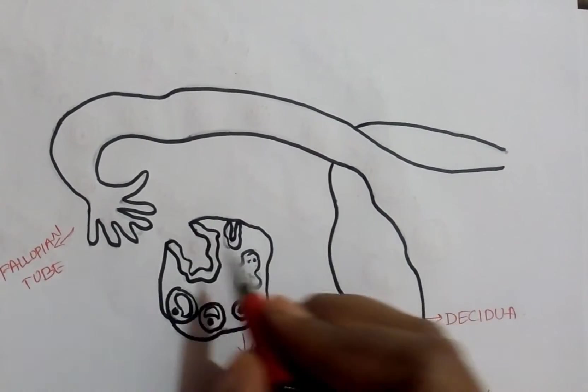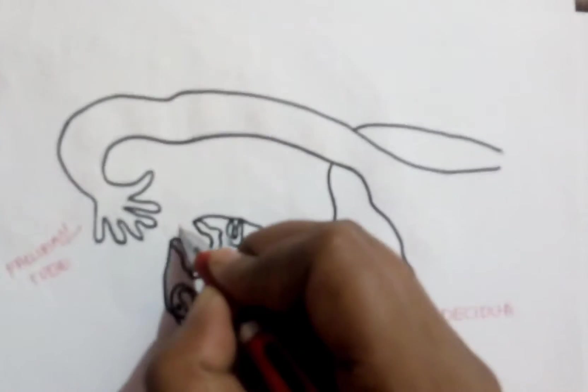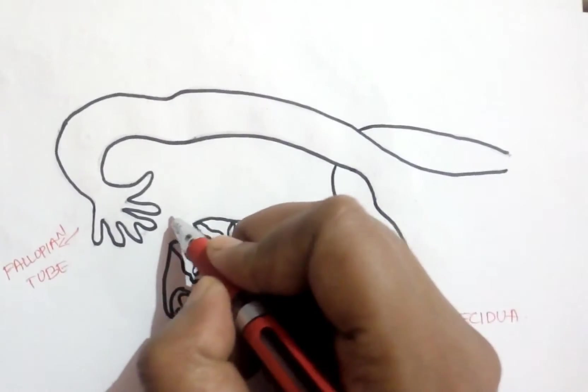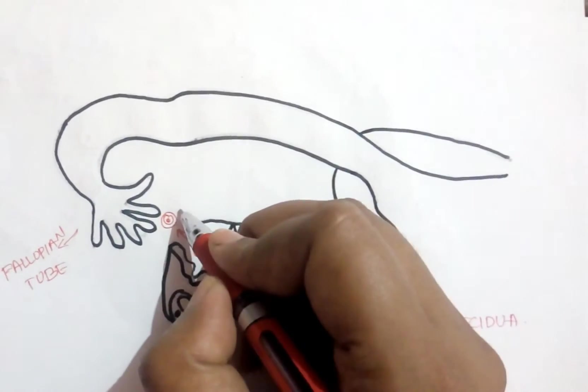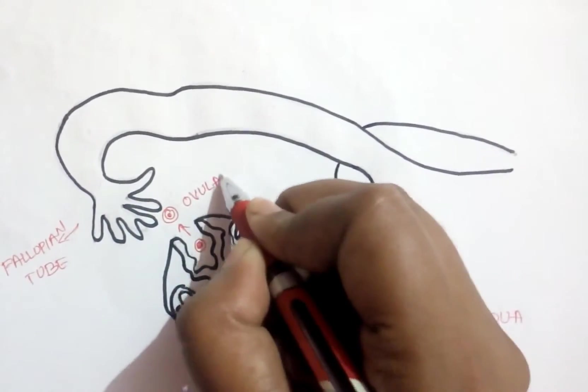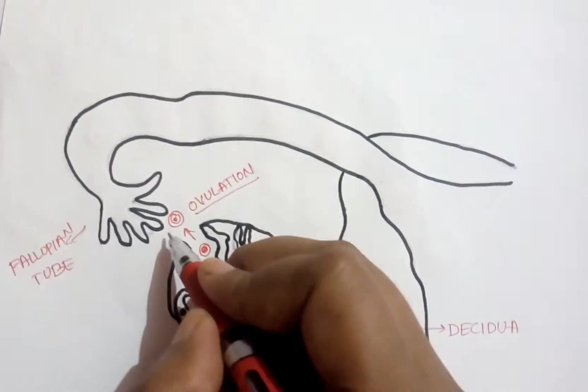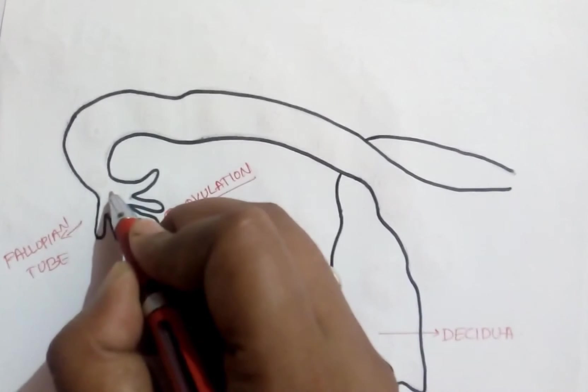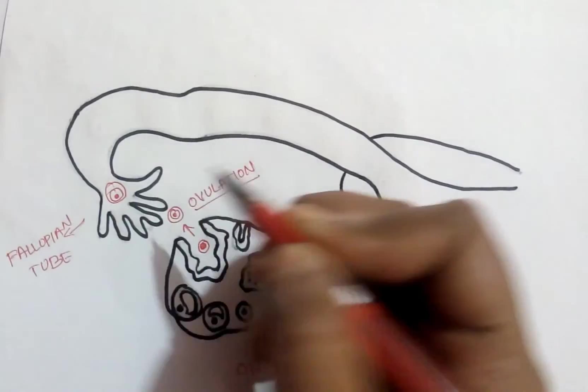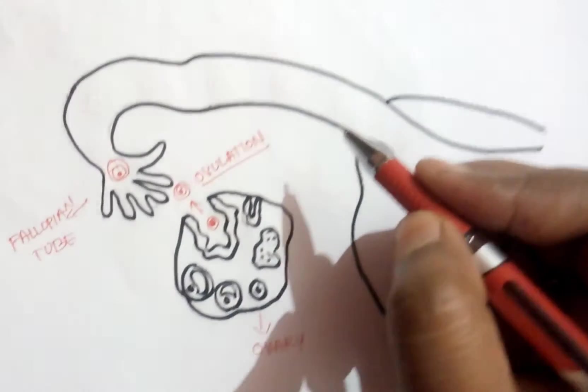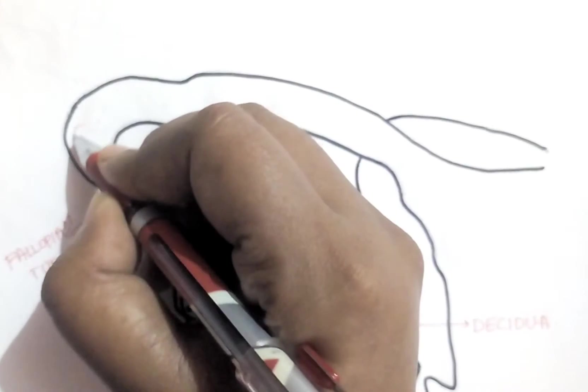As we know, as the Graafian follicle ruptures, the mature ovum is ejaculated from the ovary into the abdominal cavity, which is called ovulation. After ovulation, this ovum is captured by the fallopian tube through the fimbriated end. Through the fimbriated end, it enters into the fallopian tube.